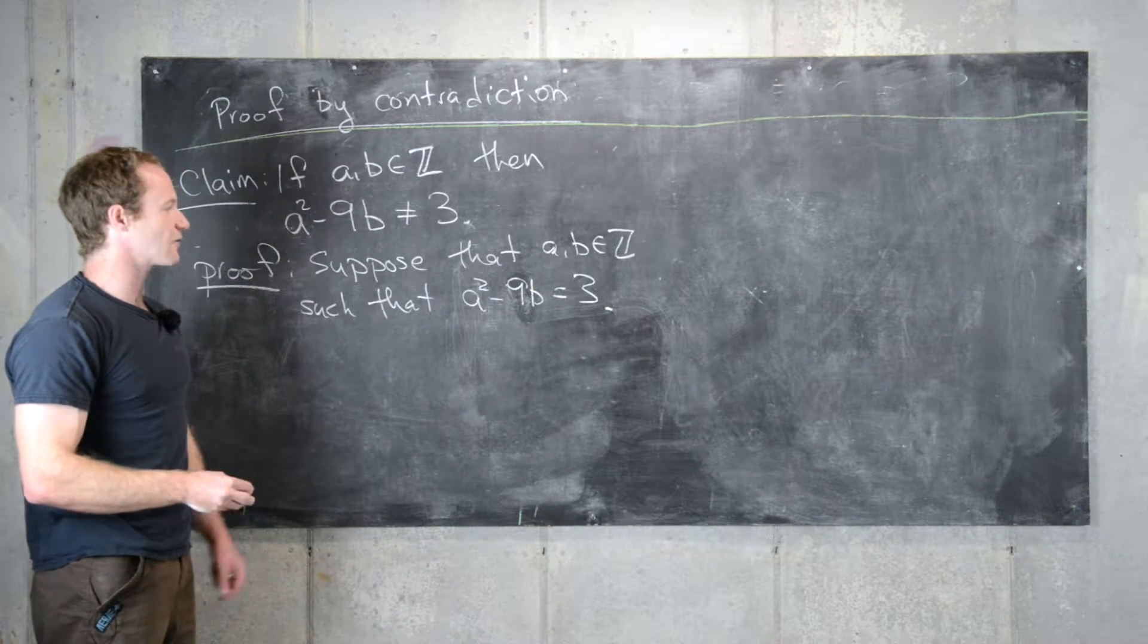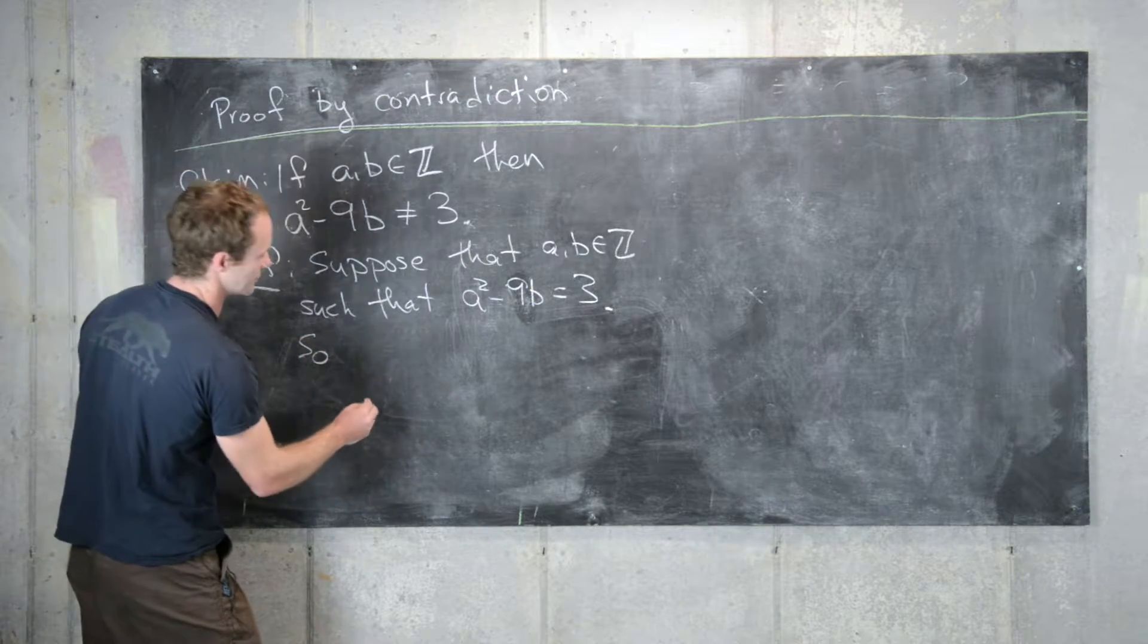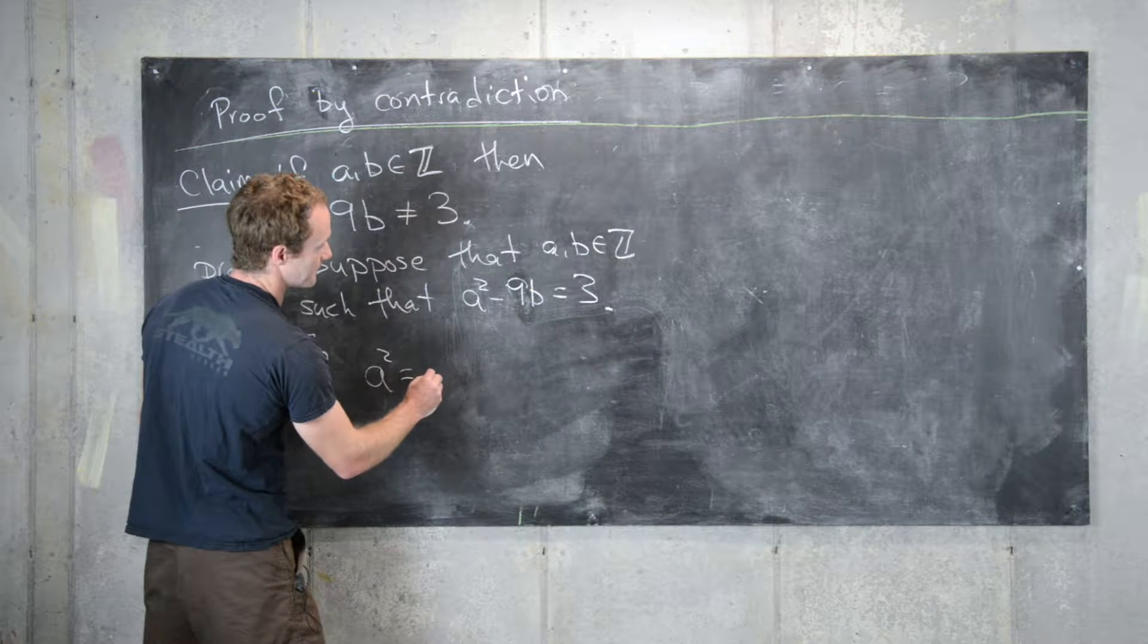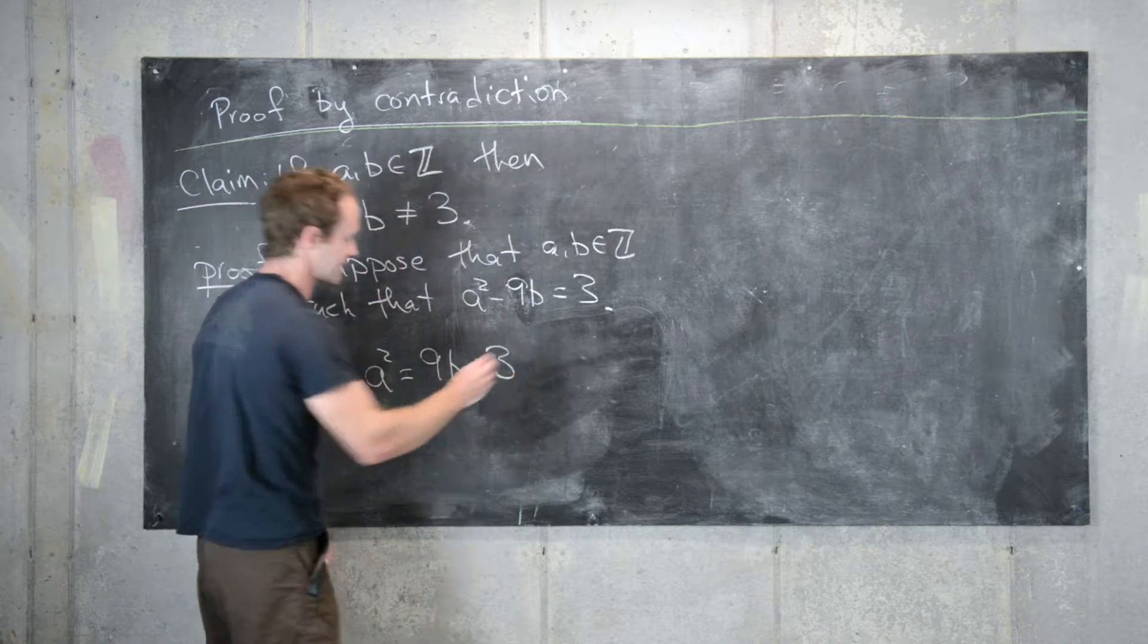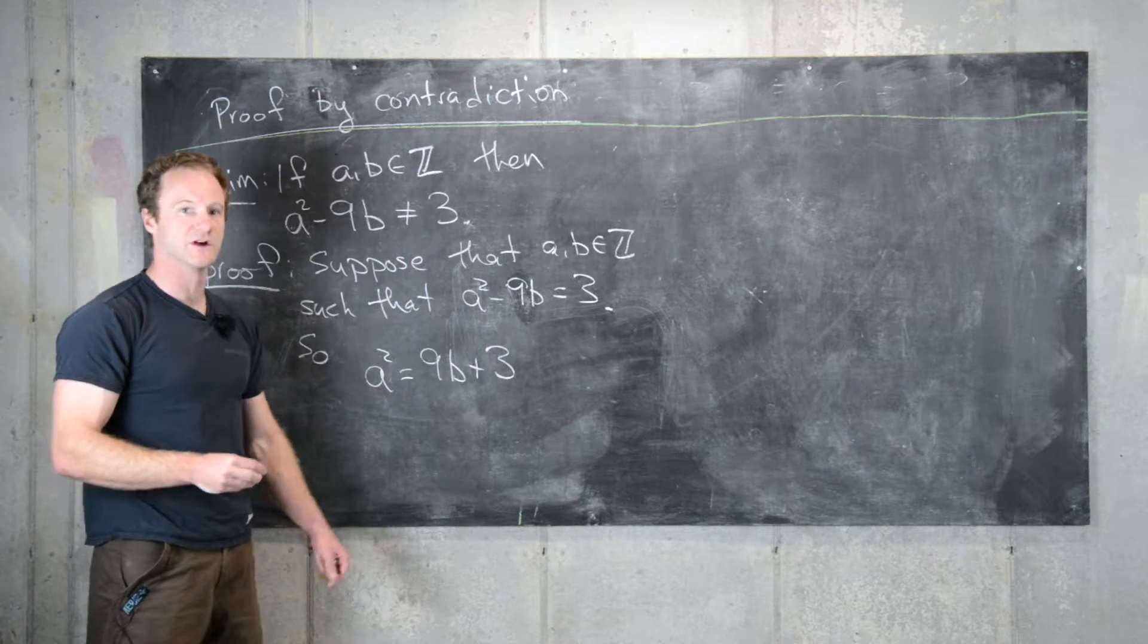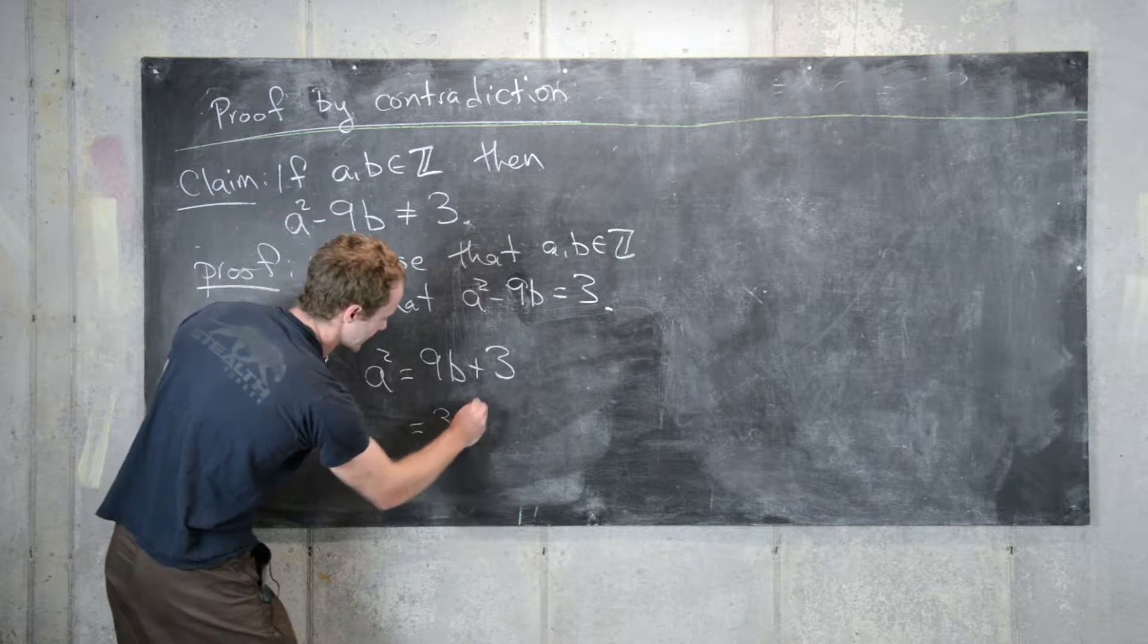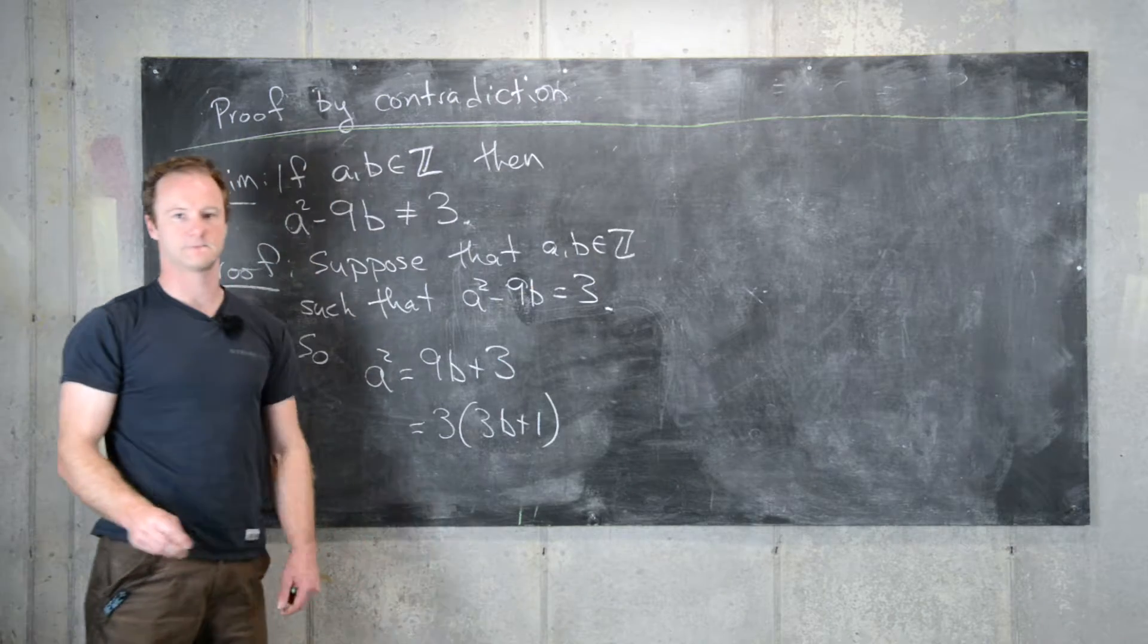So now playing around with it, we'll see that that means the following is true: a squared equals 9b plus 3, moving the 9b over, which we can write as 3 times 3b plus 1.